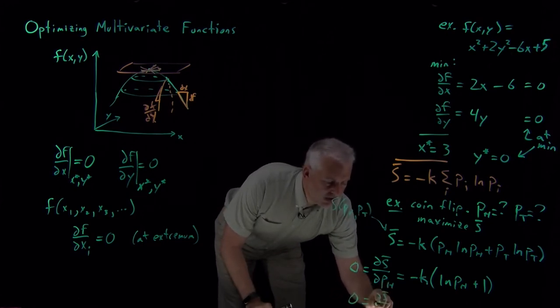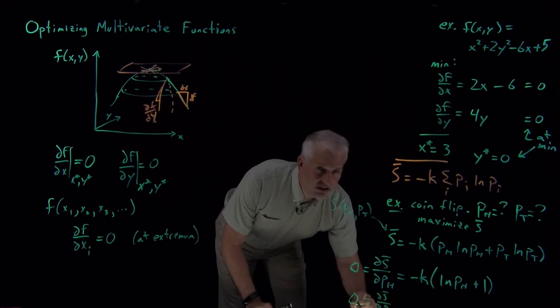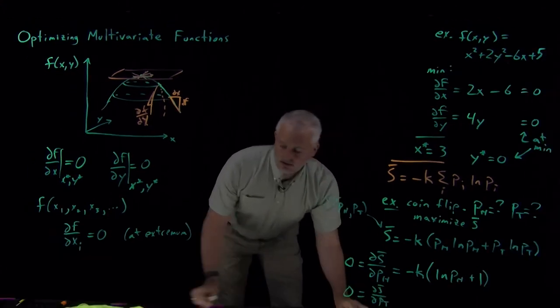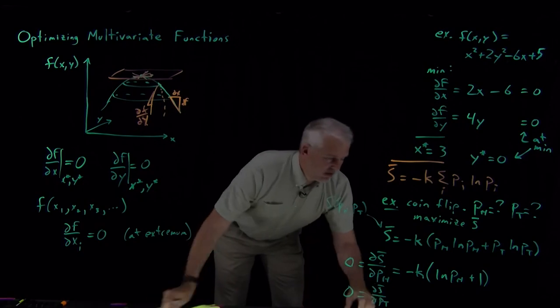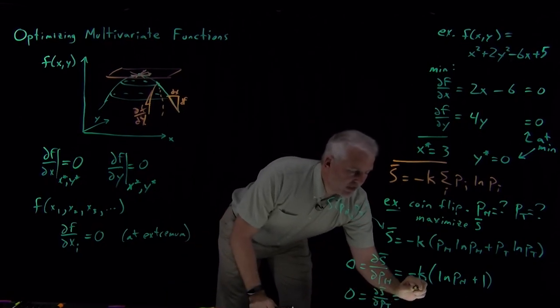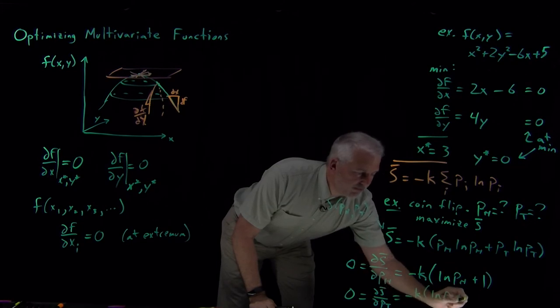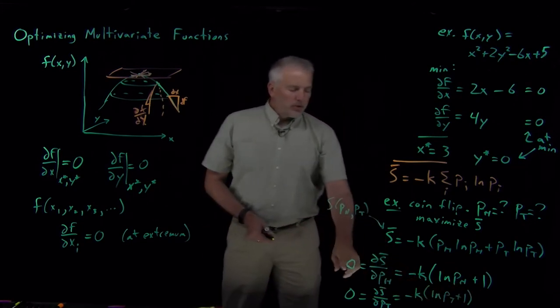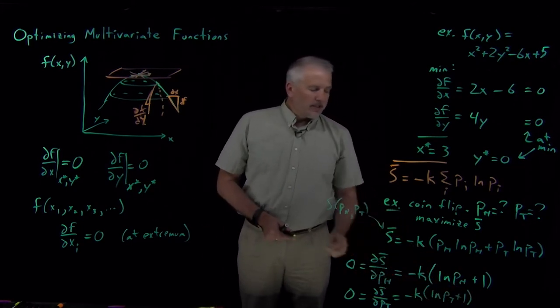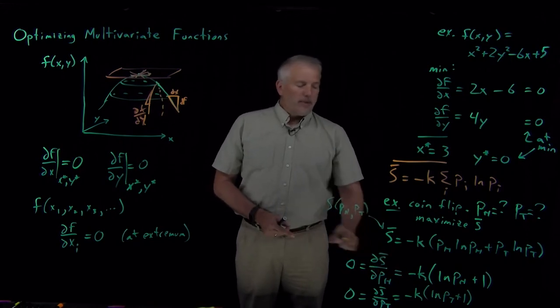And a very similar expression is going to be true for probability of tails. So dS̄/dp_tails, that's going to be -k log p_tails plus 1. So those are the two equations I have to solve for p_heads and p_tails in order to find out what maximizes the entropy.